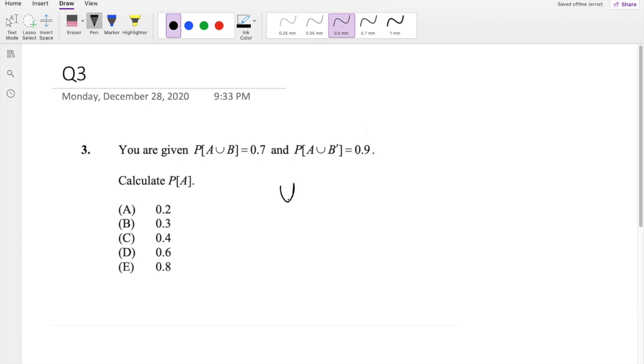So basically, this symbol means the union, right? So that's basically, if this is A and this is B, A union B is this whole thing right here.